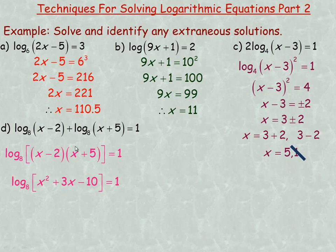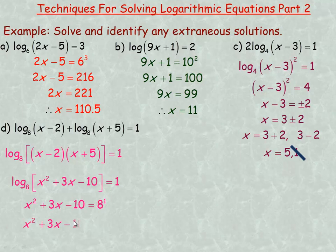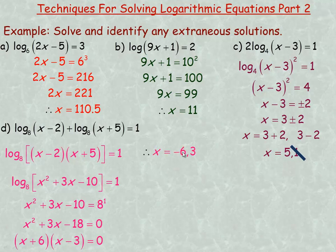Now this is similar to examples a or b — no number in front — so we rewrite in equivalent exponential form: 8 raised to the power of 1 equals the trinomial x squared plus 3x minus 10. Since 8 to the power of 1 is just 8, we have a quadratic equation. We put everything on one side set equal to 0 by subtracting 8: negative 10 minus 8 is negative 18. So we factor x squared plus 3x minus 18. The numbers that add to 3 and multiply to negative 18 are positive 6 and negative 3, giving factors x plus 6 and x minus 3. Setting each to 0 gives roots negative 6 and positive 3.